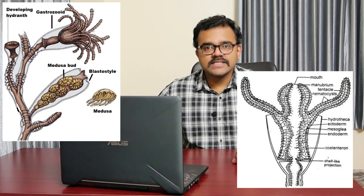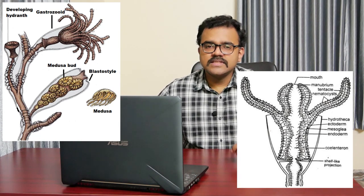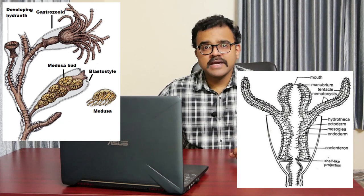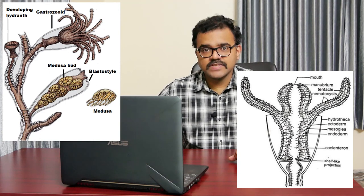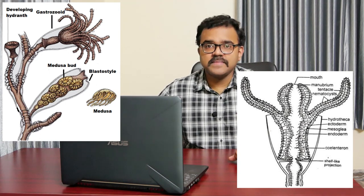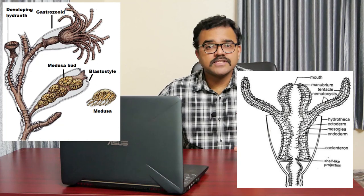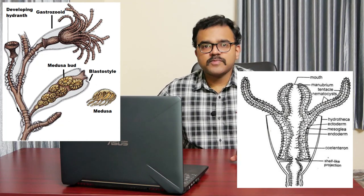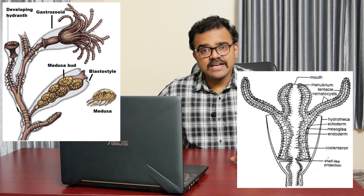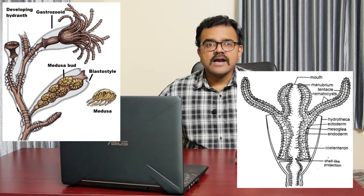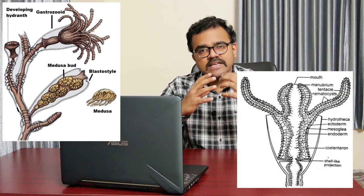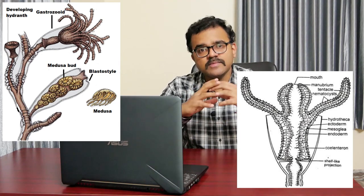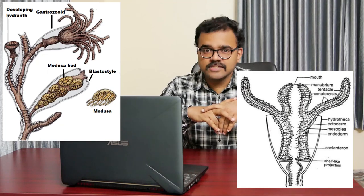Surrounding the manubrium there is a circlet of about 24 solid tentacles. This zooid is enveloped by a vase-like investment called the hydrotheca, formed by modification of the perisarc and is absolutely transparent. It is provided with a circular shelf at its proximal end upon which the whole zooid rests. The circular shelf has a central aperture through which the tubular body of the zooid remains continuous with the rest of the colony.